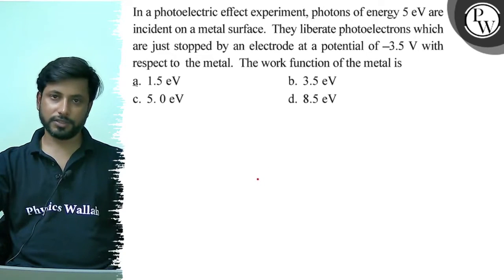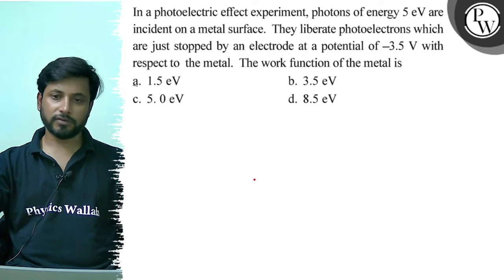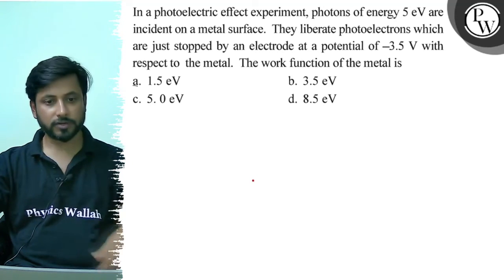Hello, let us see this question. In a photoelectric effect experiment, photons of energy 5 electron volts are incident on a metal surface. They liberate photoelectrons which are just stopped by an electrode at a potential of -3.5 volts with respect to the metal. The work function of the metal is: option A 1.5 electron volt, option B 3.5 electron volt, option C 5 electron volt, option D 8.5 electron volt.